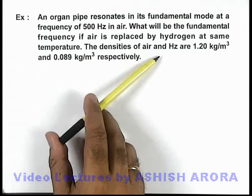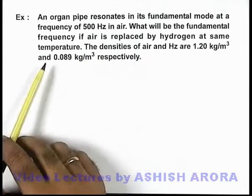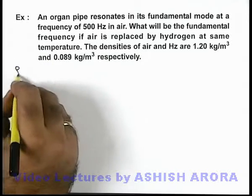The densities of air and hydrogen are 1.20 and 0.089 kilogram per meter cube respectively.